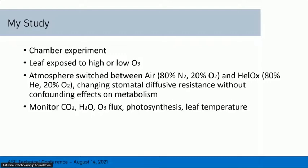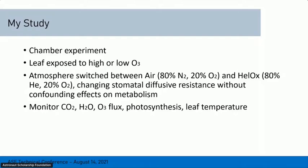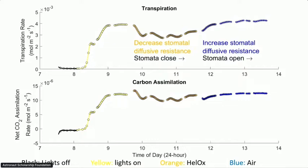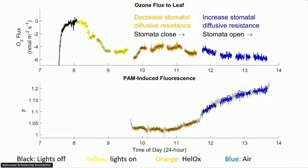While changing the atmosphere back and forth between zero air and helox, I'm continuously monitoring carbon dioxide, water vapor, and ozone fluxes, as well as photosynthesis and leaf temperature — just think of this as the leaf's vital signs. I'm going to flip through these quickly. These are time series of my data on transpiration, carbon assimilation, ozone flux, and PAM-induced fluorescence. A leaf fluoresces slightly proportional to the number of electrons going through the electron transport chain, so that bottom graph basically shows how much photosynthesis is taking place. The majority of my data processing has focused on transpiration, so that's where I'll draw your attention.